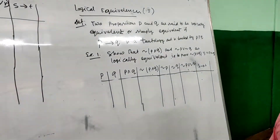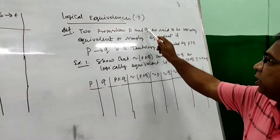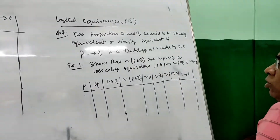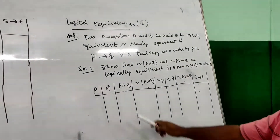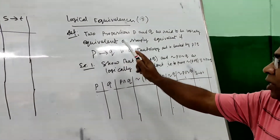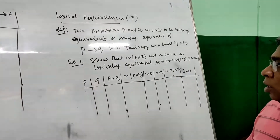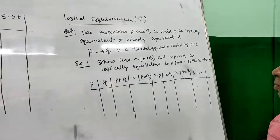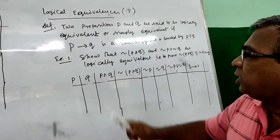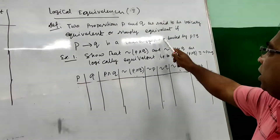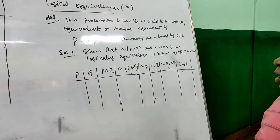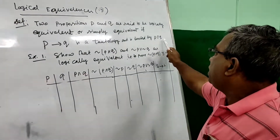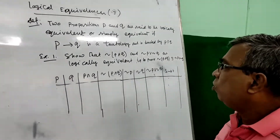Two propositions P and Q are said to be logically equivalent, or simply equivalent, if P biconditional Q is a tautology. P is a statement, Q is another statement. If P biconditional Q is a tautology, then we can say it is a logical equivalence, and it is denoted by P equivalent Q.